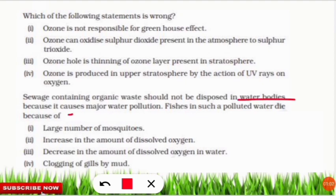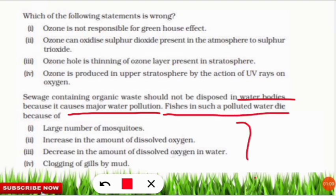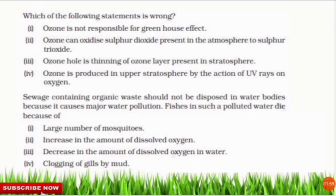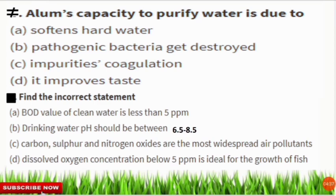The next question: sewage containing organic waste should not be disposed into water bodies because it causes major water pollution. Fish in such polluted water die because of option number three — as organic waste containing nitrogen and phosphorus increases the organic components in water, algal bloom occurs. This algae consumes the dissolved oxygen in water to sustain its life, causing dissolved oxygen levels to decrease and fish to die.